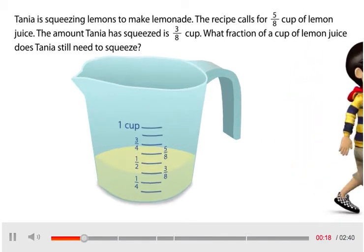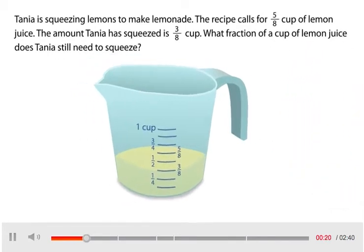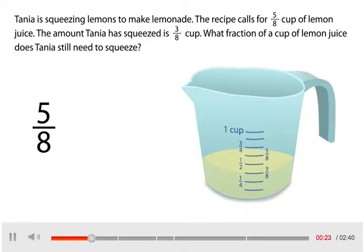Tanya is squeezing lemons to make lemonade. The recipe calls for 5 eighths cup of lemon juice. The amount Tanya has squeezed is 3 eighths cup. What fraction of a cup of lemon juice does Tanya still need to squeeze?